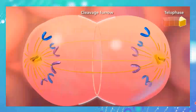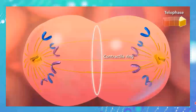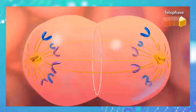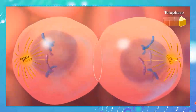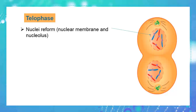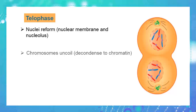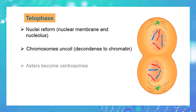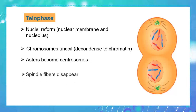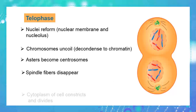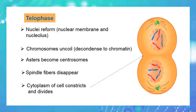During telophase, the nuclei reform — the nuclear membrane and nucleolus re-form around the genetic material. The chromosomes uncoil and return to being chromatin. The asters become centrosomes. The spindle fibers disappear, and the cytoplasm of the cell constricts, dividing in a process known as constriction. In short, during telophase, everything returns to its original state.